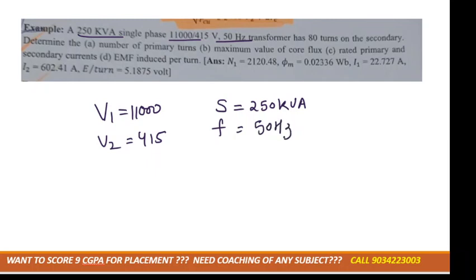And the number of turns is given on the secondary, meaning N2 is given as 80 turns. First we have to determine the number of primary turns, meaning we have to calculate N1 value.